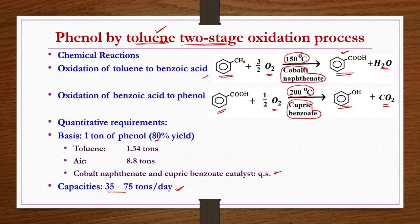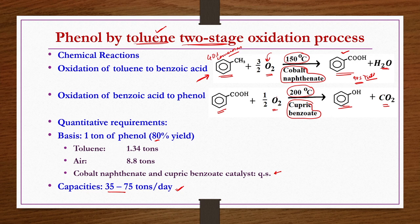The conversion of toluene is limited to 40%, accomplished by using excess oxygen or air. Even though only 40% of toluene is converted, you get more than 90% yield of benzoic acid. In the second stage, benzoic acid is oxidized with excess oxygen so that more than 80-90% yield of phenol is obtained. However, when you take the overall yield of both steps, it comes to about 80%.